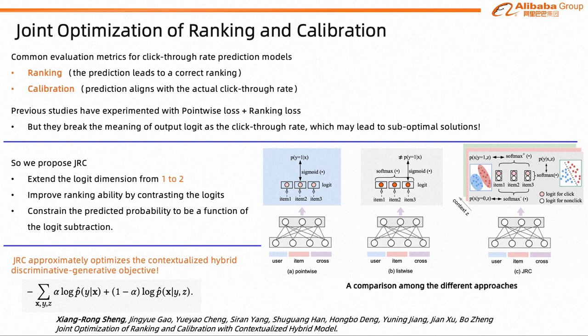On the other hand, to optimize the ranking ability, ranking loss, for example pairwise or listwise loss, can be adopted as they usually achieve good rankings.